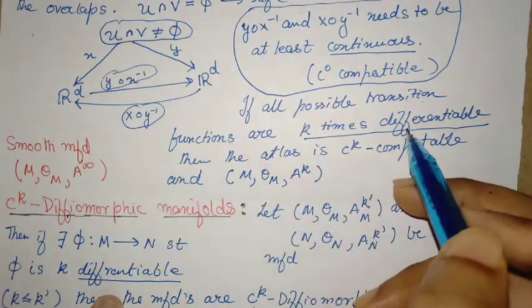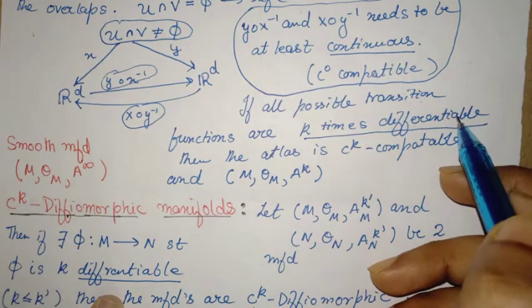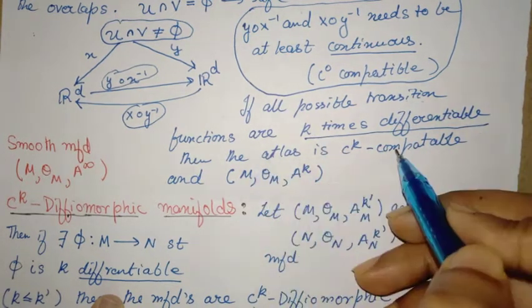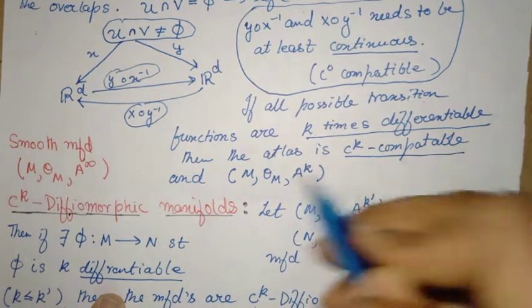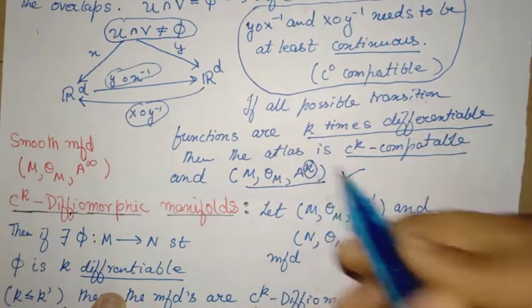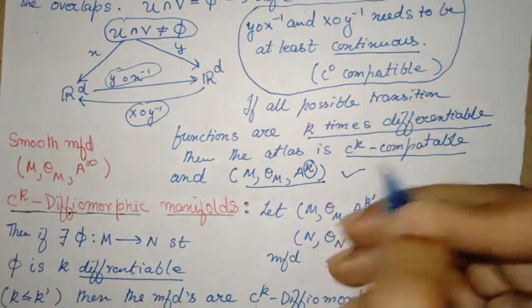Because you are in Euclidean space, the R^d space, you can talk about differentiability in a very nice way. If they are k times differentiable - that means k+1 times continuous - then the atlas is called C^k compatible.